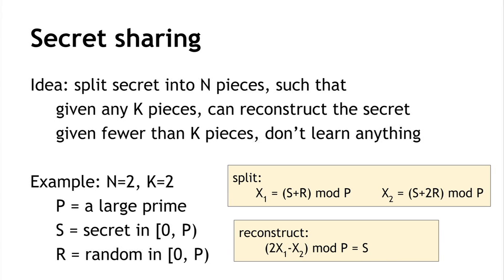Given two shares, we can reconstruct. But given only one share, it turns out we don't learn anything. Consider x1: we took S and added to it a random number r, which could take on any value between 0 and p minus 1 with equal likelihood. The result of S plus r modulo p is equally likely to take on any value between 0 and p minus 1, regardless of what S was. So this share by itself looks like a purely random number and doesn't convey anything about the value of S. Similarly, x2 by itself doesn't convey any information about S.